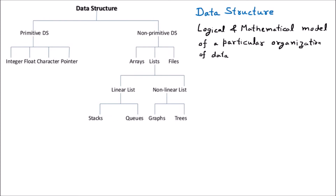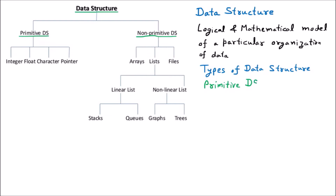Now we are going to discuss the types of data structure. There are two categories of the data structure. The first one is primitive and the second one is non-primitive. In the diagram it is also mentioned that the data structure is of two types — primitive and non-primitive. We can make the short form of data structure as DS, so primitive DS.